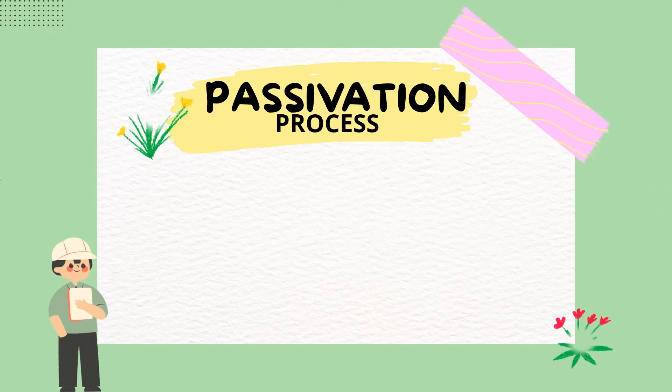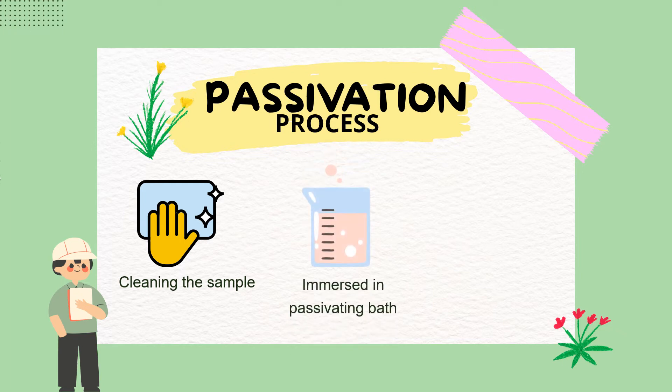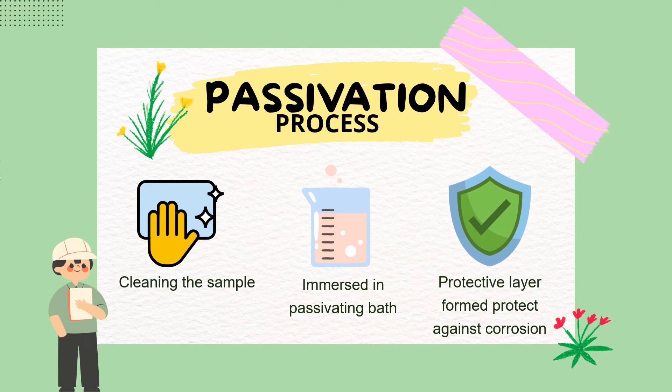The passivation process involves two steps. The first step is cleaning, which involves removing the contamination. After that, the second step involves immersion of the metal part in a passivating bath. The bath coats the surface of a metal object with a microcoating that protects it against oxidation.